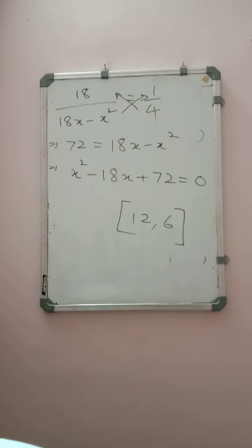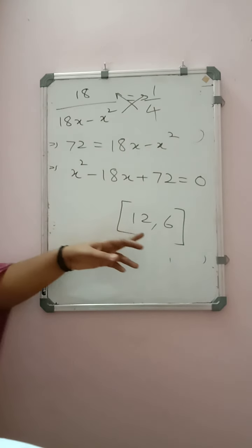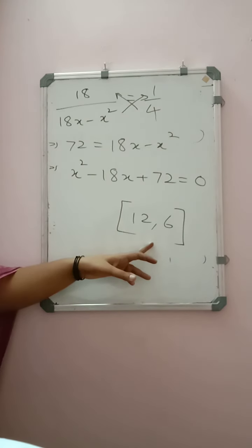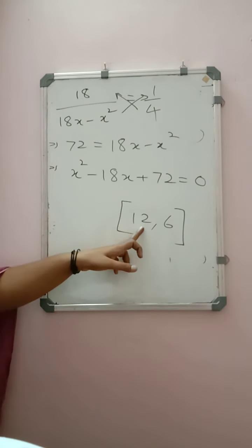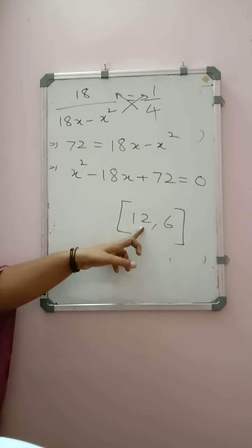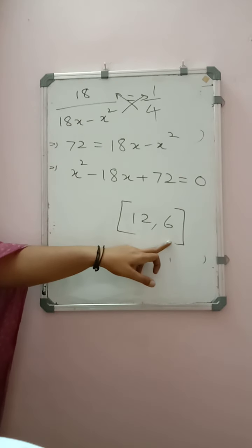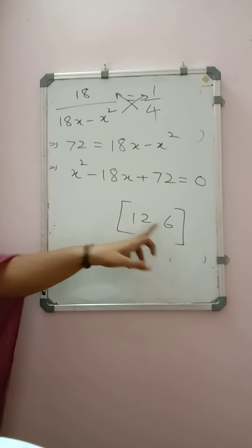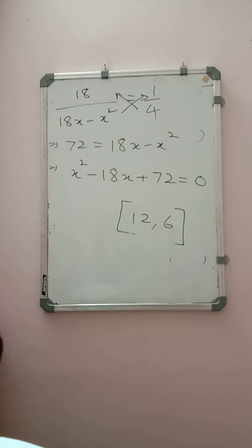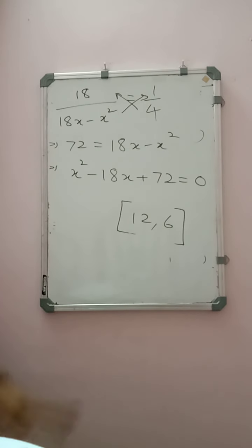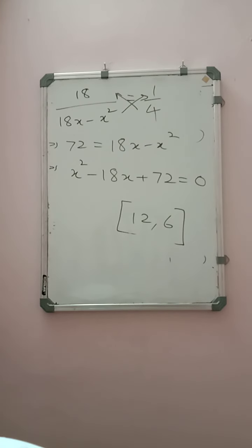When you solve you will get these two values. If x = 12 then y = 6, or if x = 6 then y = 12 — both answers are correct since the sum is 18 either way. Write the answer: the numbers are 12 and 6.